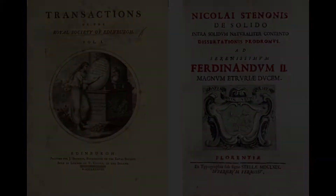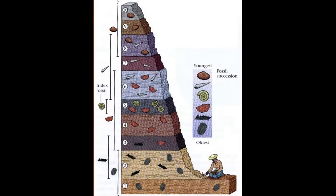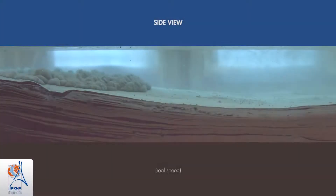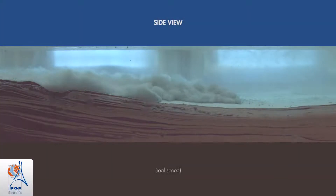The first principle used in geology is the principle of superposition. If you look at deposits, the rocks deposited first will be at the bottom, and those on top will be younger. At the bottom of the ocean, heavier rocks settle first, then finer material settles through the water column and will be younger.